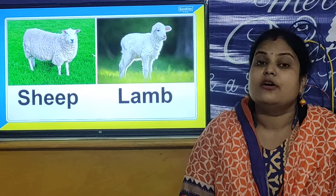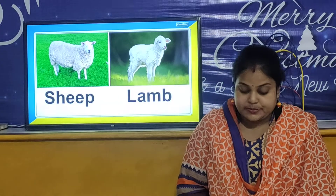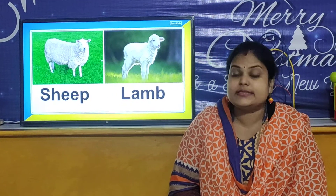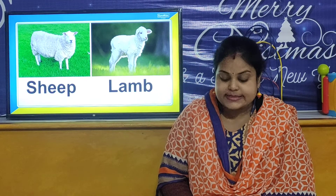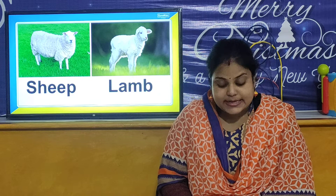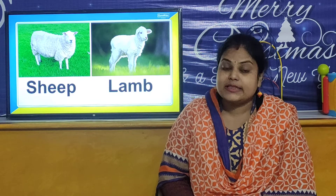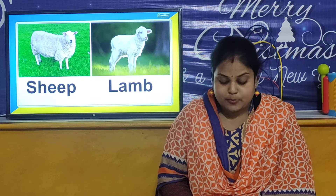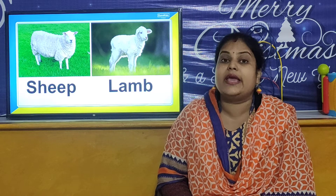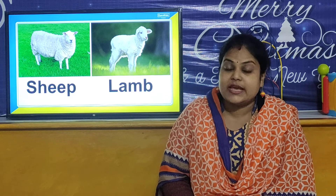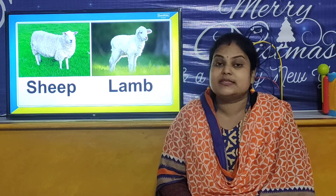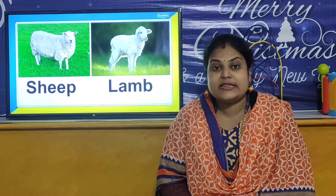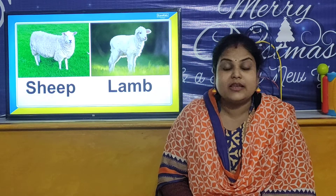Sheep is a farm animal. Sheep has two eyes, two ears, one nose, one mouth, four legs and a small tail. It has thick woolly hair all over the body, which is used to make wool.